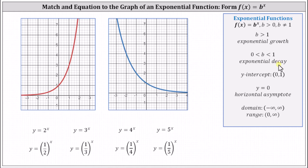For all functions in this form, the y-intercept is always the point zero comma one. Y equals zero is a horizontal asymptote. And we also have the domain and range.